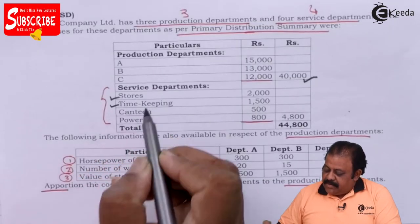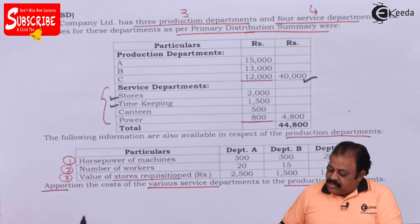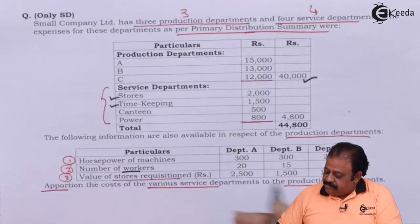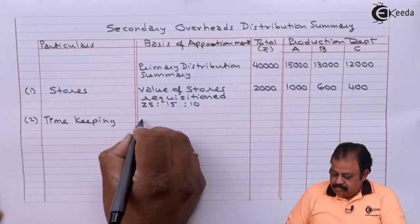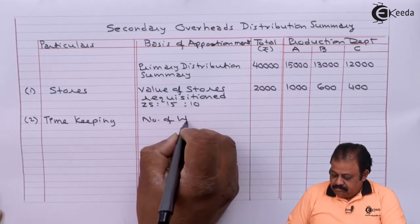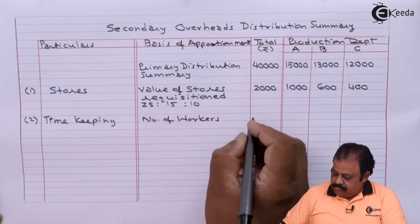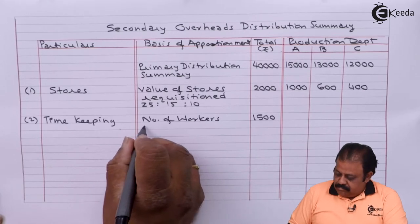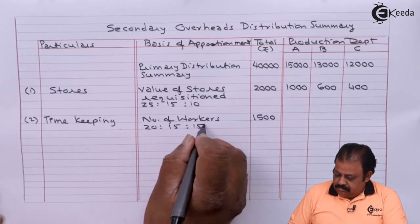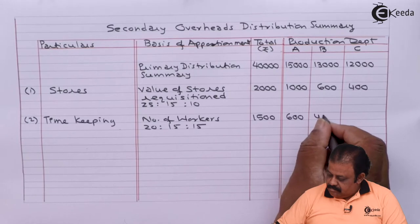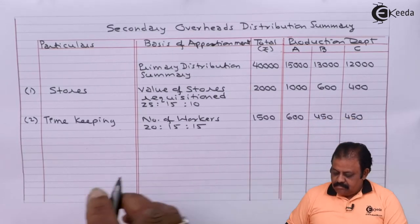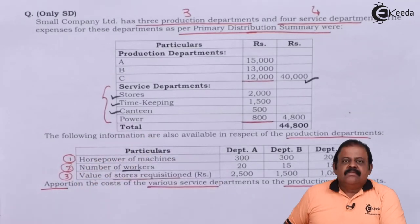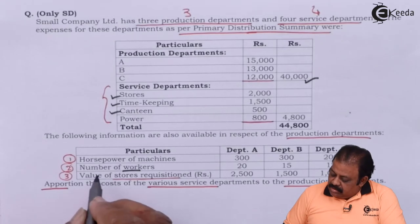Next we have timekeeping. This expense will be apportioned based on number of workers. Next, canteen expense — this will also be allocated based on number of workers.